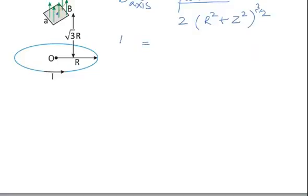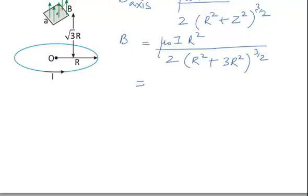So in this case magnetic field B will be given by μ₀ current I R² upon two times R² plus root 3 whole squared, that is 3R² to the power 3/2, which can be written as μ₀I times R². So this becomes 4R².